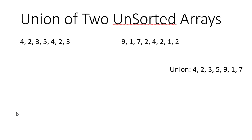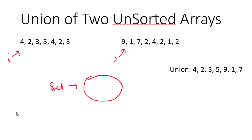We iterate through the first array using index i and insert each element into the set. Starting from index 0: 4 is not in the set, so it gets added. Then 2 is added, then 3, then 5. When we reach the duplicate 4, the set already has it so it won't be added again. Similarly, duplicate 2 and 3 are also rejected. So for array 1, we get the elements {4, 2, 3, 5}.